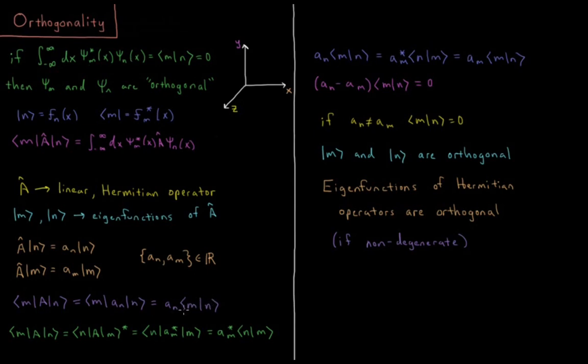All right, we can do the same thing using the definition of a Hermitian operator. We have ⟨m|A|n⟩ equals ⟨n|A|m⟩* quantity. So that is equal to a_m* times ⟨n|m⟩, because we have A acting on m gives us a_m, and that's a_m*.